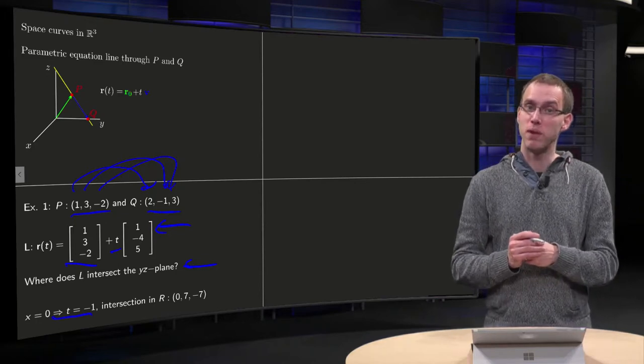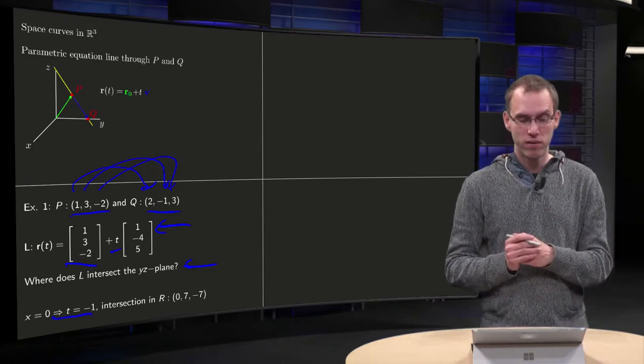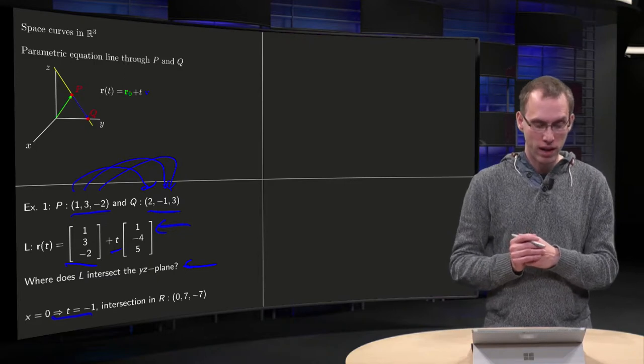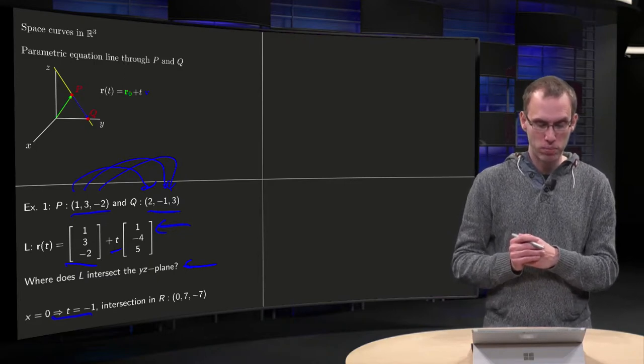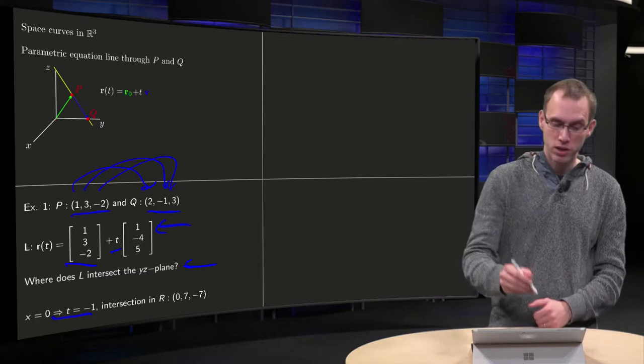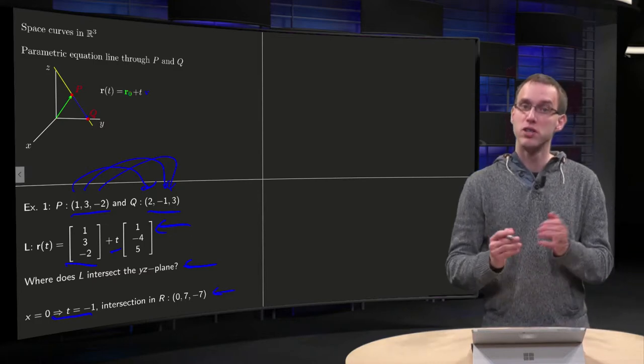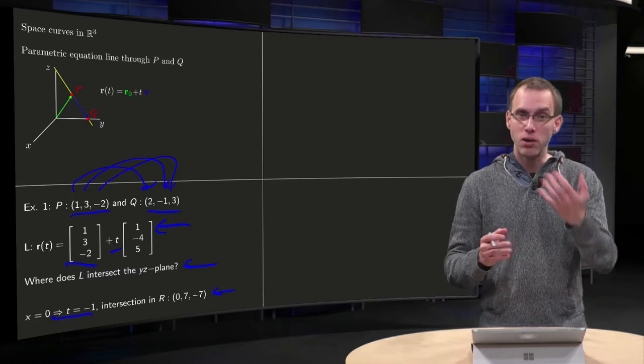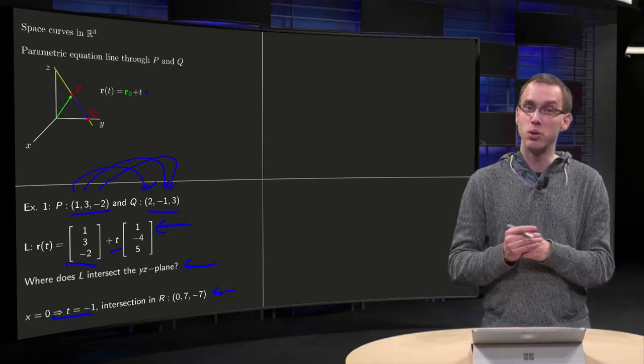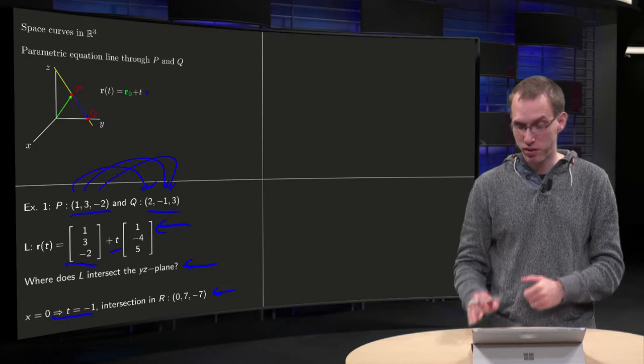And if we plug in t equals minus 1 into our vector equation, we get out 0 and then 7 and then -2 minus 5, which is -7. So we intersect the yz plane in the point R (0, 7, -7). So that is an example for which you can use a vector equation.